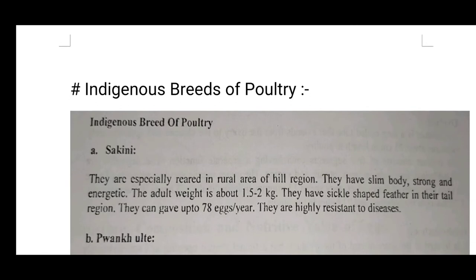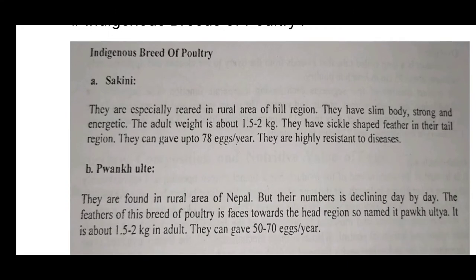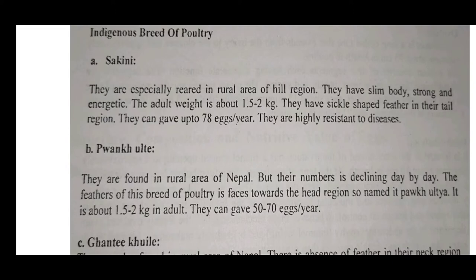The next topic is indigenous breeds of poultry. First is Sakini — they are specially reared in rural areas of the hill region. They have a slim body, strong and energetic. The adult body weight is about 1.5–2 kg and they have sickle-shaped feathers in their tail region. They can give up to 78 eggs per year and are highly resistant to disease.